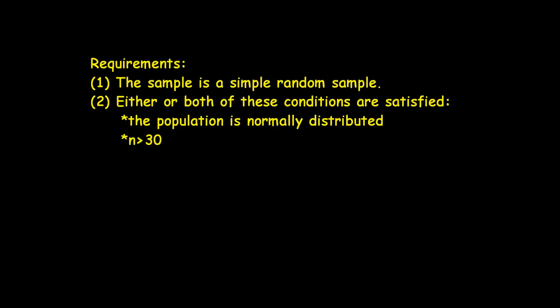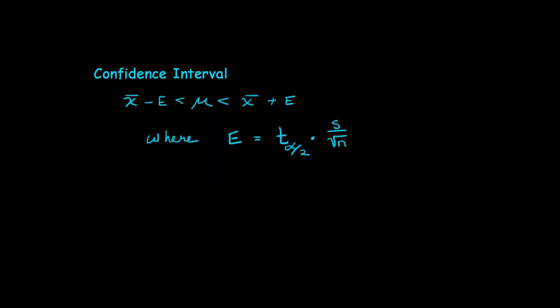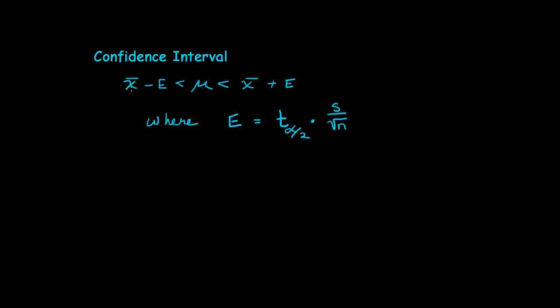So our confidence interval that we're going to construct looks like this. We use our point estimate, x bar, and we subtract from it the margin of error to get the lower confidence limit. And we add the margin of error to get the upper confidence limit. So where does E come from?